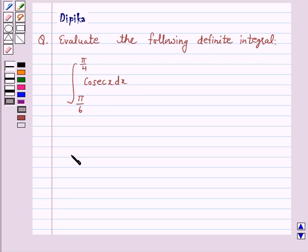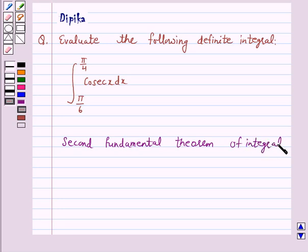Now we know that by the Second Fundamental Theorem of Integral Calculus, integral from a to b of f(x) dx, where f is a continuous function defined on the closed interval [a,b], is equal to F(x) from a to b, where F is an antiderivative of f.